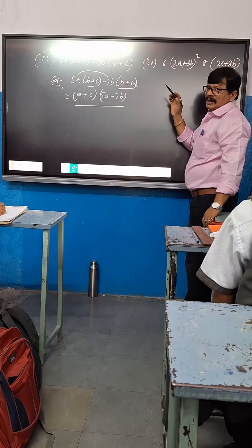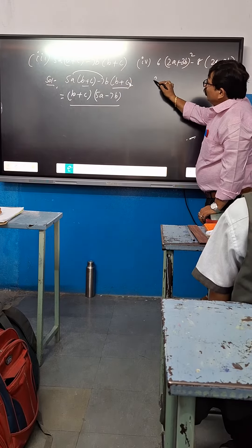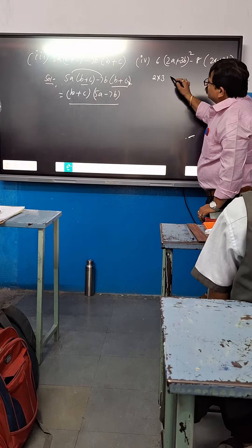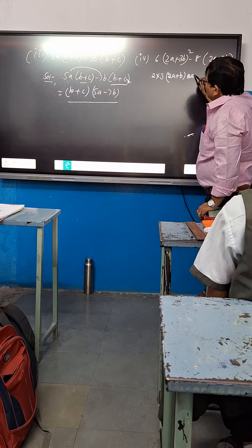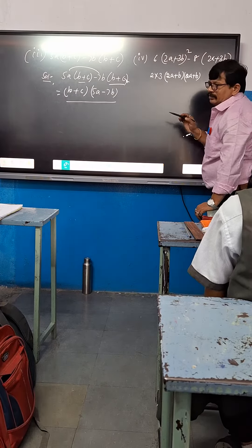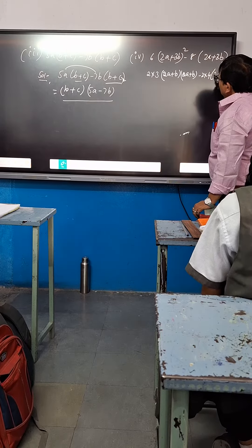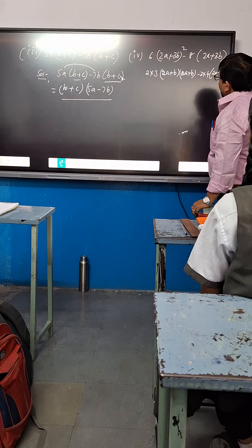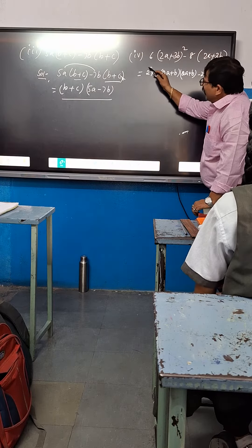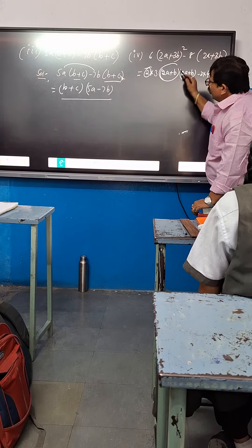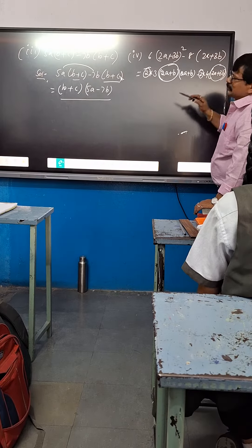Next here, listen carefully. You already have 16 here, 8 there. 2 into 3 — write this one: 2A plus B, and 2A plus B. Minus 2 into 4, 2A plus 3B. Here, simple way — already 2 there. 2A plus B, already 2 there. 2A plus B common.